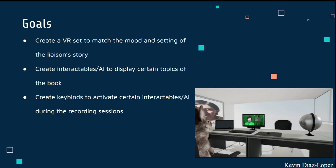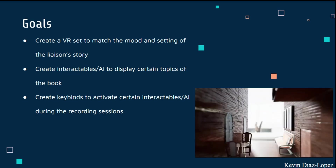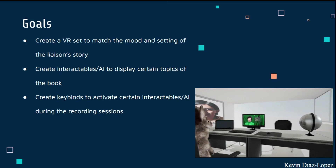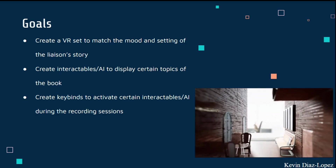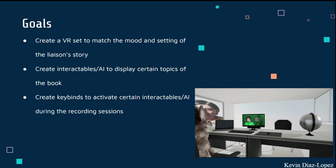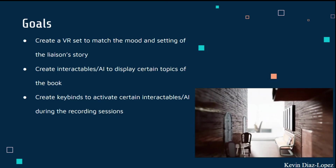As previously mentioned by Daniel Ramirez, it was really important when creating the VR set that we matched the mood and setting of the liaison's story to ensure her film came out as she wanted, as it was a form of advertisement for her book. Another important thing was having interactables and AI to display certain topics of the book, so that if our liaison ever wanted to use this environment in the future, she could use it to display her book. We also created keybinds to activate certain interactables and AI to help during recording sessions.